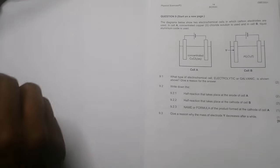Now let's have a look at question nine. The diagrams below show two electrochemical cells in which carbon electrodes are used. In cell A we've got concentrated copper chloride solution, and in cell B liquid aluminum oxide is used. I'm going to answer the questions eventually, but just to show you quickly.